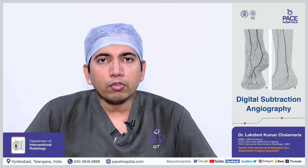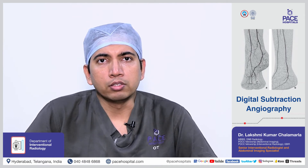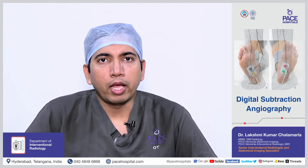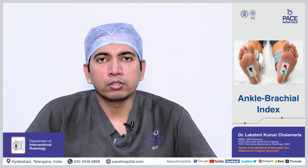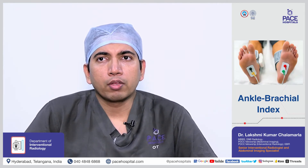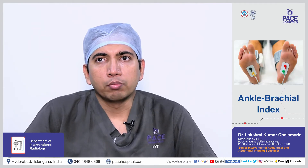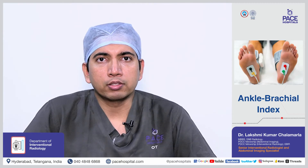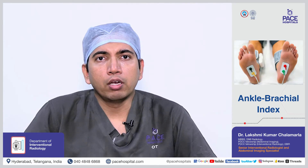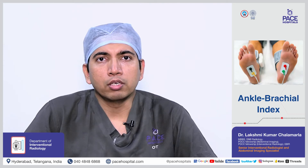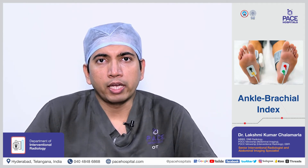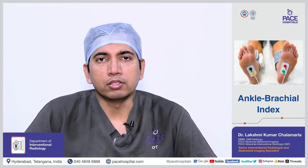To diagnose peripheral arterial disease, there is one test called ankle brachial index. In this test, we measure the blood pressure in your ankle and also in your arms, both in resting condition and after exercise. If the ankle blood pressure is less compared to the arm blood pressure, that is an indication sign that you have peripheral arterial disease.